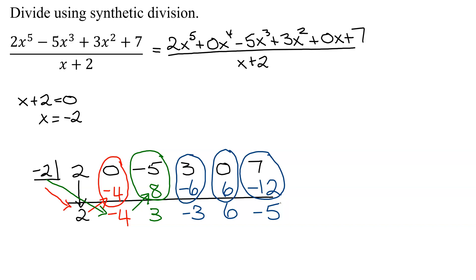So we've now completed the process of synthetic division. Now all we have to do is interpret the results. The last number here, this is the remainder. And this big mess here, this whole thing, is going to be the quotient.